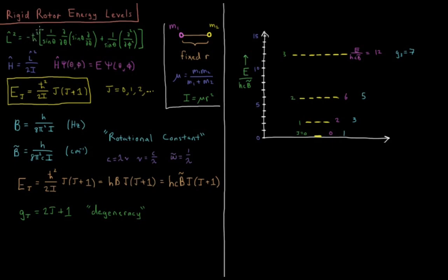So negative h-bar squared 1 over sine theta d d theta times the product sine theta d d theta plus 1 over sine theta second partial derivative with respect to phi.